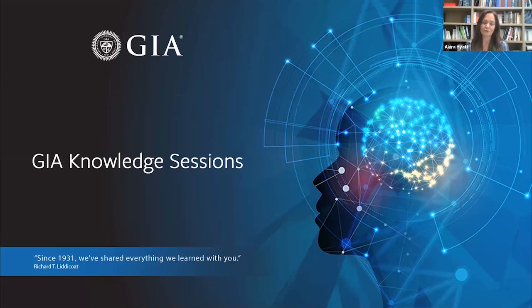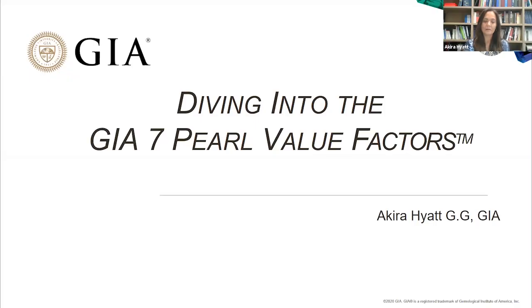Nacreous pearls can and do occur naturally in a wide range of appearances, in terms of their size, shape, color, and surface conditions. These variations in appearance are primarily determined by the pearl types and their inherent differences. This talk will address how to accurately and consistently evaluate, separate, and describe pearls according to those differences. When I use the term pearl without qualification in this talk, I'm referring to nacreous cultured pearls. When I mention natural pearls, I will refer to them as such.